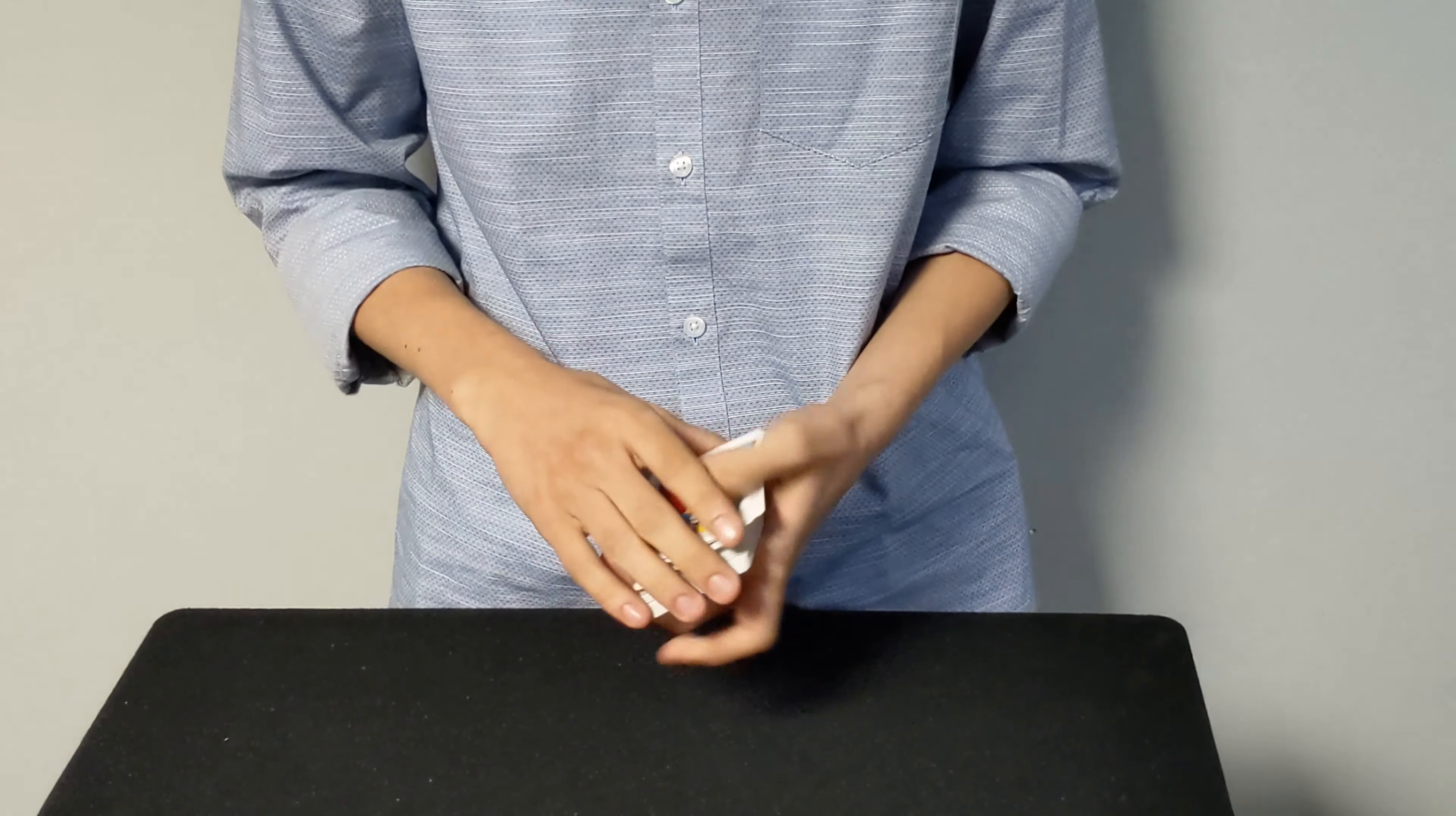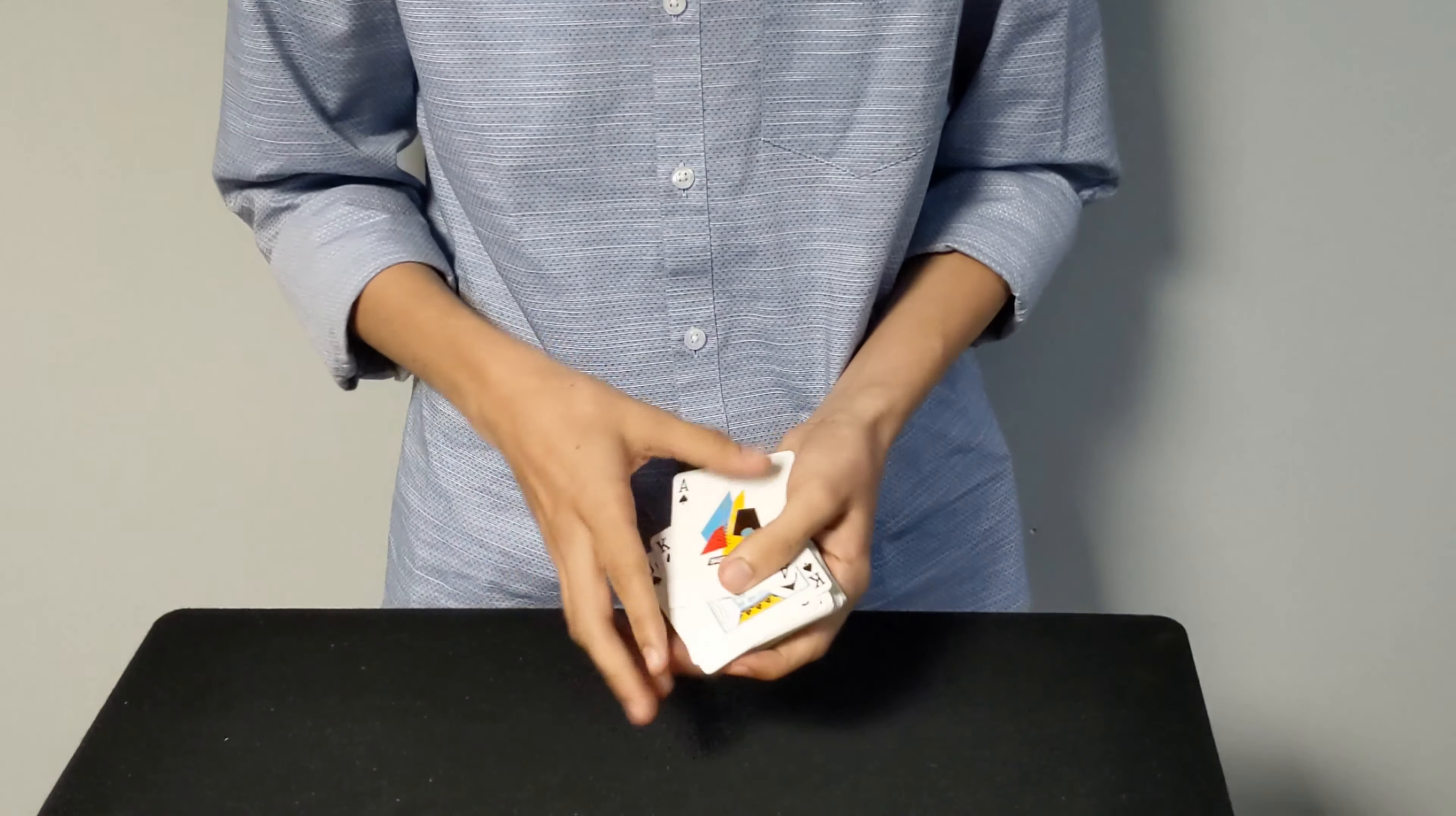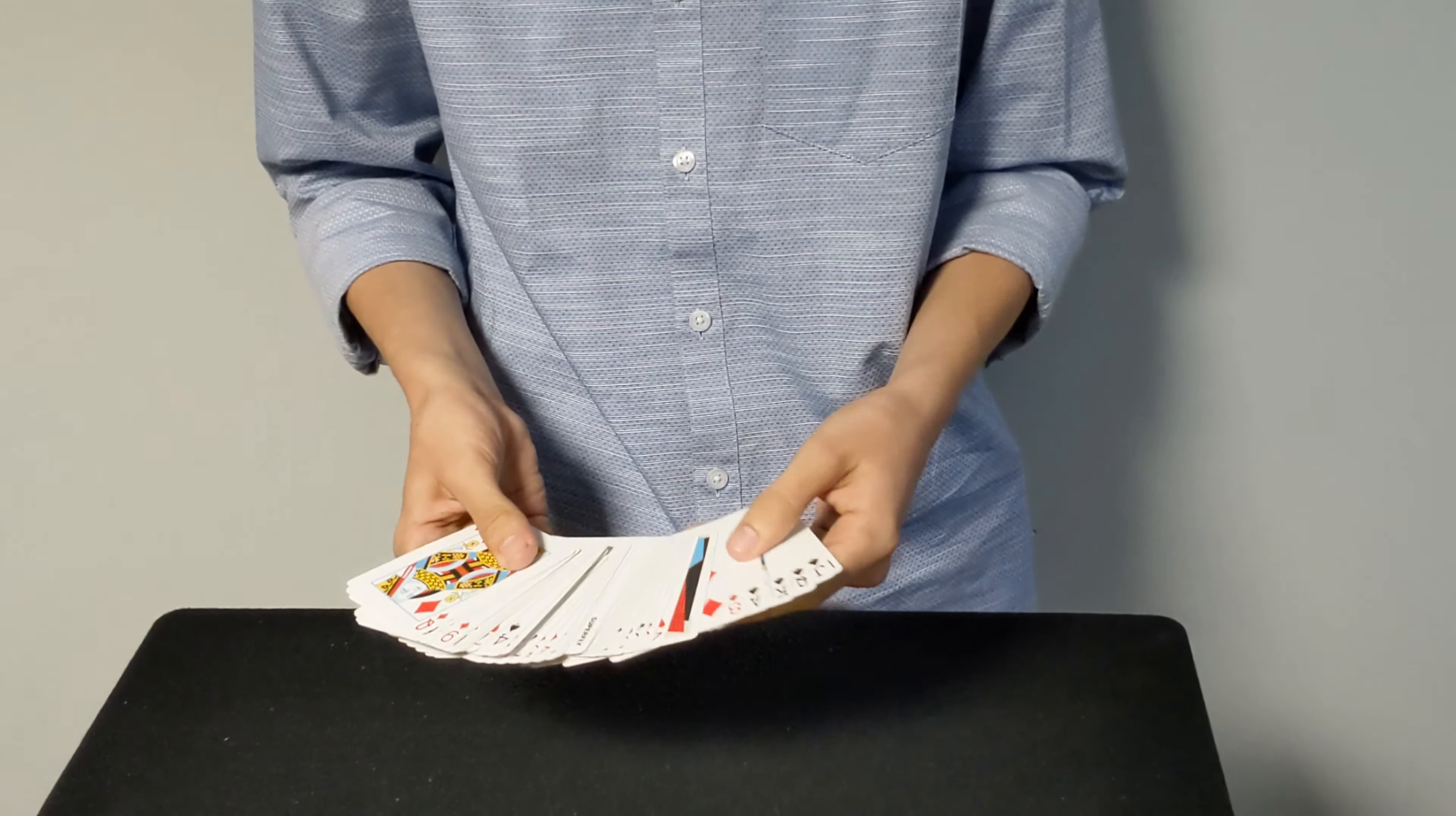So what he does in the performance is he goes through and shows that all the cards are different, and in which case they are and in no particular order. What I would do at this point, actually let me show you what he does and then I'll show you what I would do. So he turns it back over, catches a break under all five cards, and then he does a double undercut. Now if you don't know how to do the double undercut, I do have a tutorial on it and I'll link it up at the top and down in the description as well. And it just brings all five cards to the bottom of the deck.